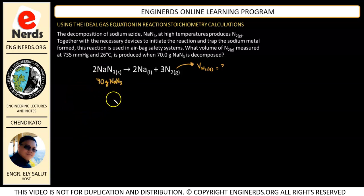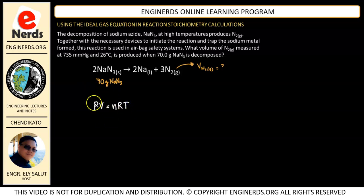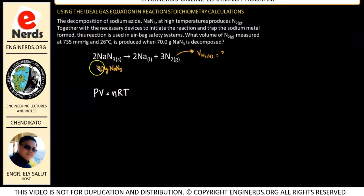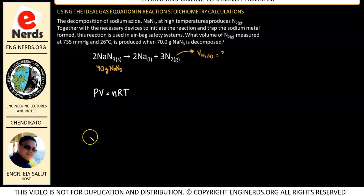So now what do we need to do? We need to get the volume, and we know we are going to use our ideal gas equation, which is PV = nRT. Our required is to find the volume. We already have the pressure and the temperature, and R is a constant, so we just need to get the number of moles of N2 gas.